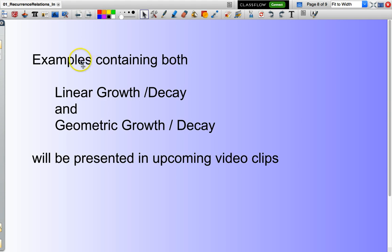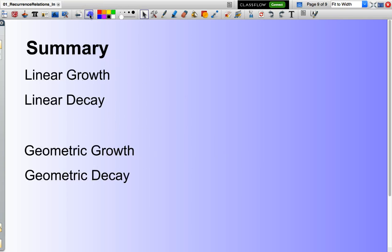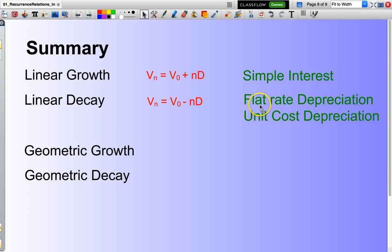Now, both examples, one example looked at linear growth and the other one looked at geometric growth. Some more comprehensive examples looking at interest rates and the like will be presented in upcoming video clips. Now, what we'll be specifically looking at: linear growth. The recurrence rule for linear growth is V_n equals V_0 plus N multiplied by D. And the main example of linear growth is that of simple interest. Linear decay - notice here, the only difference is that D is negative. And examples of linear decay are flat rate depreciation and unit cost depreciation. We'll look into those in a little bit more detail in upcoming videos.